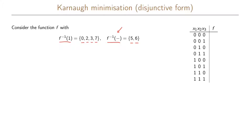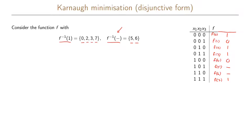In our truth table, with input 0,0,0 we will have the output f(0), then f(1), f(2), f(3), f(4), f(5), f(6), and finally f(7). So in our truth table: f(0) = 1, f(1) = 0 because it is not in the onset or don't-care set so it must be in the offset. f(2) = 1, f(3) = 1, f(4) = 0, f(5) = don't care, f(6) = don't care, and f(7) = 1. This is our truth table of the boolean function.